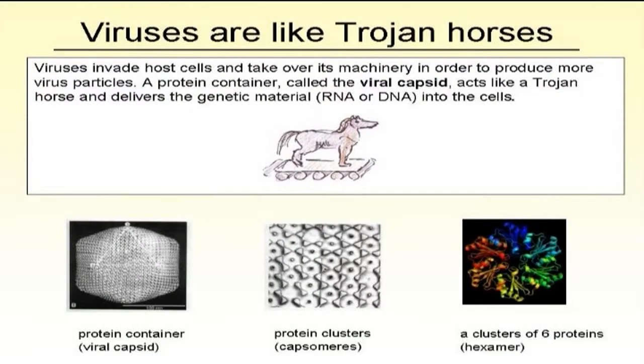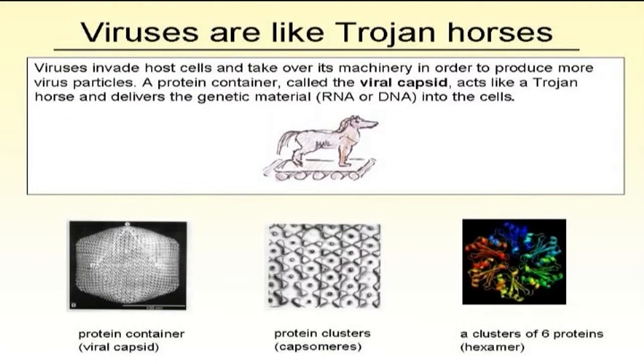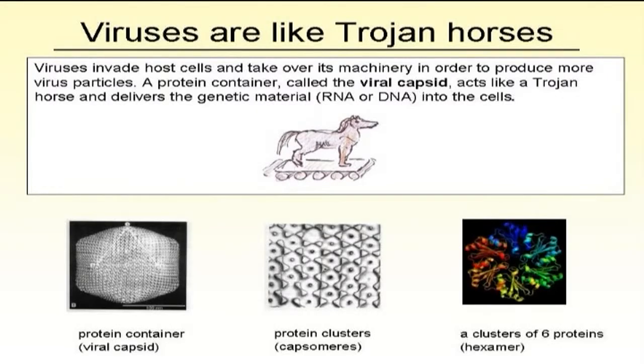A little background about viruses: in a nutshell, a virus consists of a protein container that protects the genomic material and transports it into the cell — similar to a Trojan horse. The capsid protects the genomic material, brings it into the cell, releases it, and the genomic material hijacks the cellular mechanism, produces new building blocks of viruses, which come together to form new viruses and are released. What we are particularly interested in is the surface structure of these protein containers.